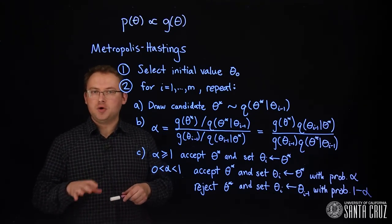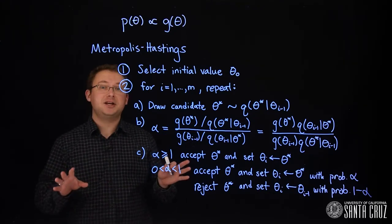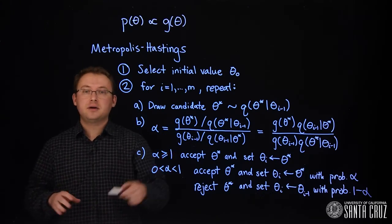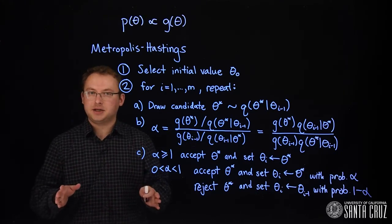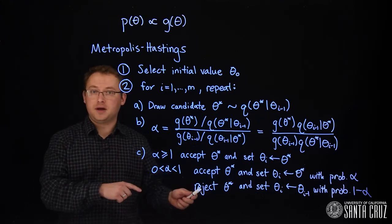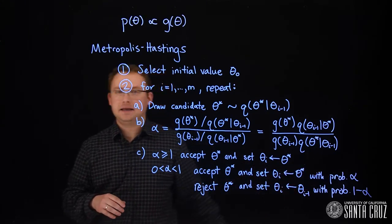If the proposed move to the candidate is advantageous, meaning if alpha is greater than 1, we will move there for sure. If it is not advantageous, we might still move there, but only with probability alpha.